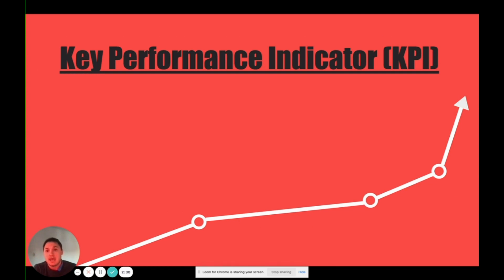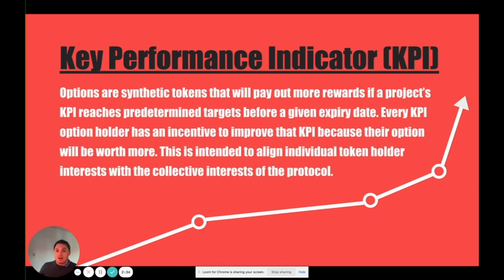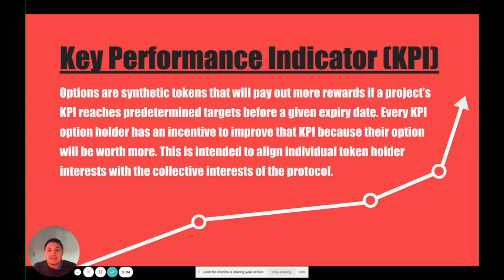Key performance indicator options are a synthetic token that will pay out rewards based on whether a certain metric is met or not. This can be employed by a DAO to lock up collateral, create KPI option tokens, and hand those tokens out to the members of their community. For example, if you are a liquidity pool and you want to incentivize liquidity pool mining instead of paying out native rewards, you can pay out KPI option indicators that will pay out more rewards if liquidity stays in the pool for a longer period of time. This both aligns the pool's need for more liquidity as well as the miner's need for extra rewards, so staying in the pool longer generates extra rewards.